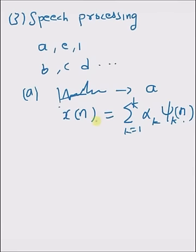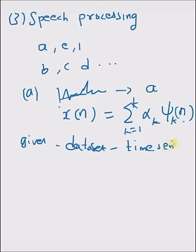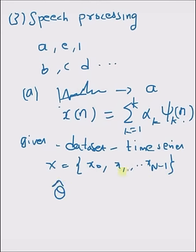The estimation problem can be summarized as follows: Given a data set or a time series, the goal is to determine the hidden parameter theta on which this time series depends. Say we have a time series x that has values x0, x1, and so on up to xn minus 1. Our goal is to find an estimate of the hidden parameter theta on which all these values depend by using an estimation function g of x. So g is the function that transforms the given data into an estimate of the hidden parameter theta.